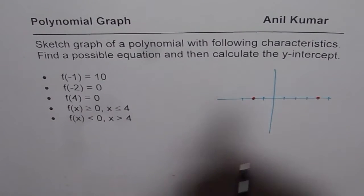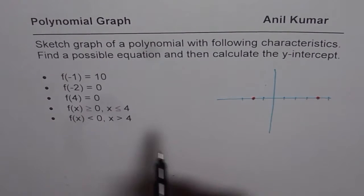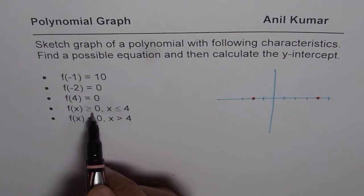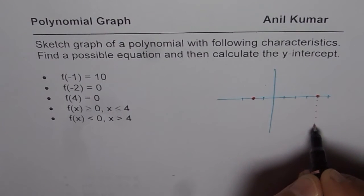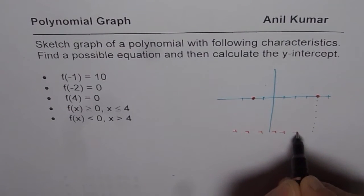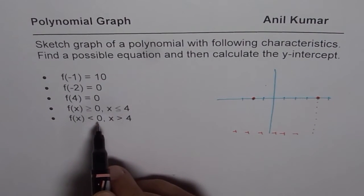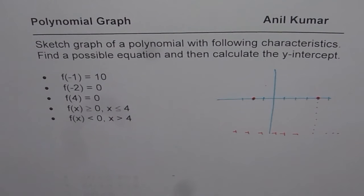f of minus 1 is 10. So let us say somewhere here is a value 10 for us. Now, what we are also given here is the function f of x is greater than or equal to 0, that means non-negative, 0 or positive, when x is less than 4. So that means on the left side of this, the function is positive. So it is above the x-axis on the left side of 4. And the function is less than 0 means it is negative on the right side of the second zero.